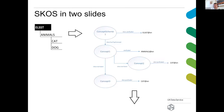Essentially, what SKOS does is rip apart what looks like a traditional tree structure and make it into a big network of concepts and properties. If you're not really familiar with SKOS it might seem intimidating at first, but the basic principles of SKOS you can learn in about 30 minutes.